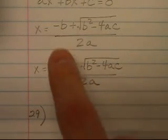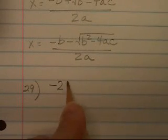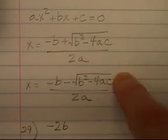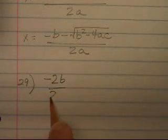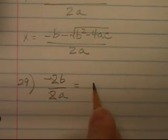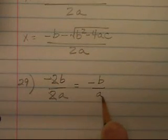If we add these, negative B plus negative B will be negative 2B. The radical parts of these expressions are opposites, so if we add them they will cancel. So this is minus 2B over 2A. The twos cancel, so the sum of the two roots is minus B over A.